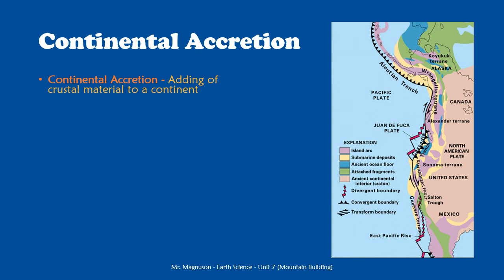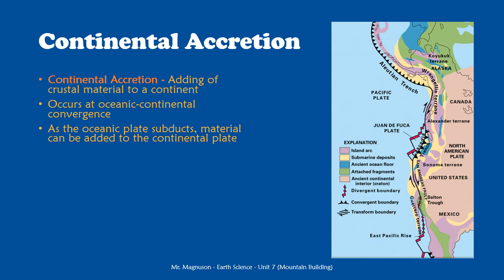As we have the oceanic plate subducting under the continental plate, there might be stuff on top of it — lots of sediments, large rock formations sticking out of the seabed, volcanic island chains, or smaller continents. All of this material can be added to the continental plate as the oceanic plate that contains it runs up against that continental plate.